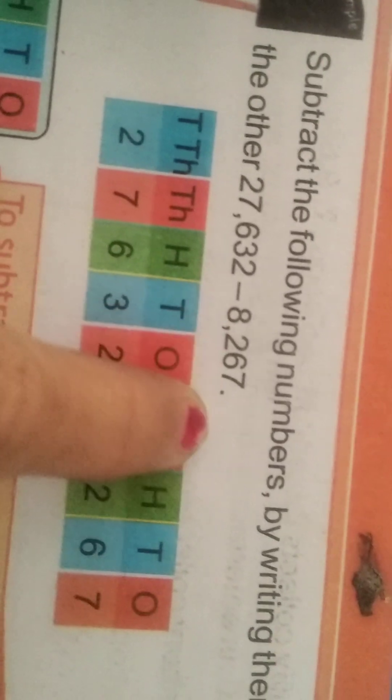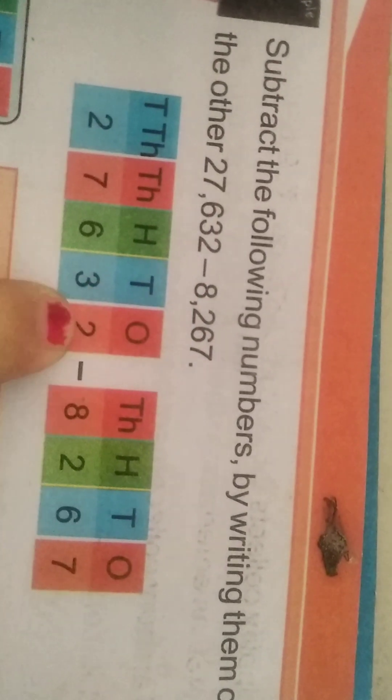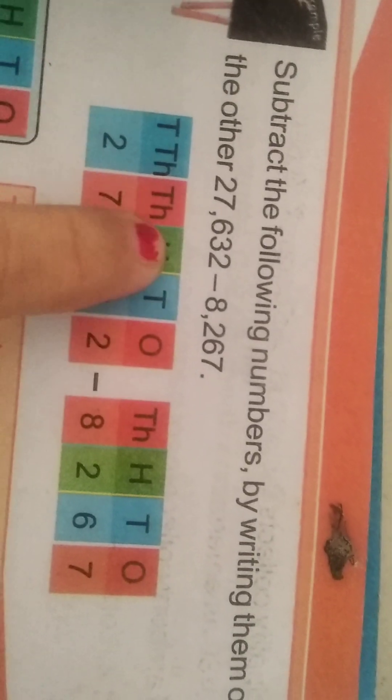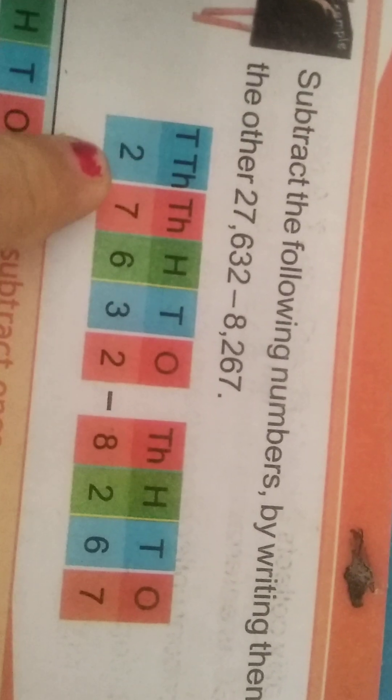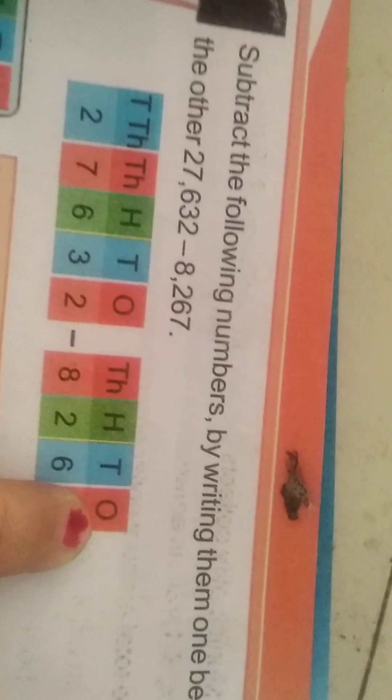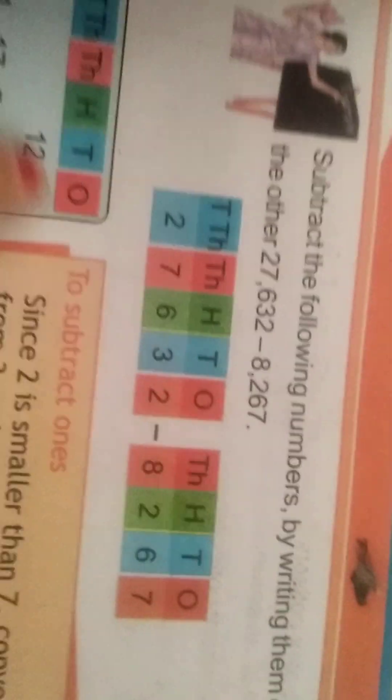27632 minus 8267. You have to write like this: 27632 - 2 ones, 3 tens, 6 hundreds, 7 thousands, 2 ten thousands. Then 8267 - 7 ones, 6 tens, 2 hundreds, 8 thousands.